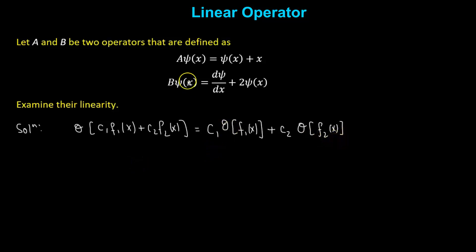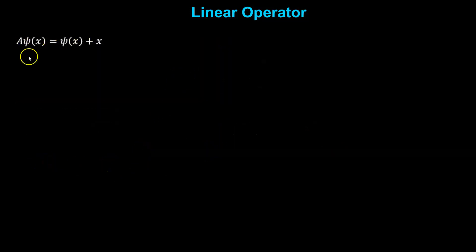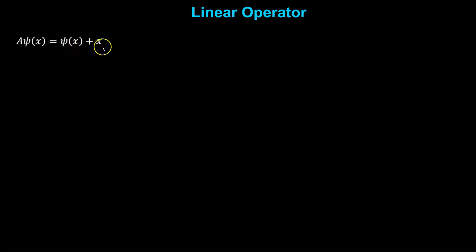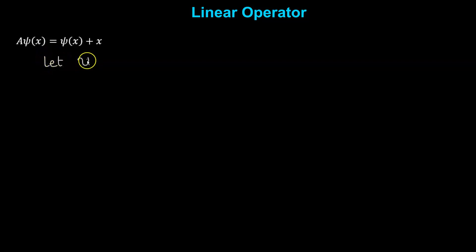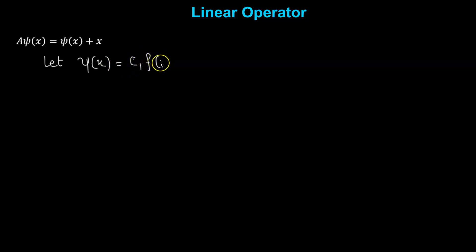We'll use this property to check whether a and b are linear or not. Let us start with operator a, which is defined such that when it operates on the function psi(x), it gives us the function itself plus x. To check whether operator a is linear, we assume that psi(x) is given by the linear combination of two functions: c1 times f1(x) plus c2 times f2(x).